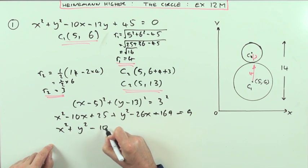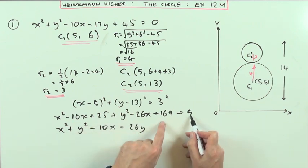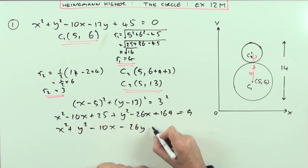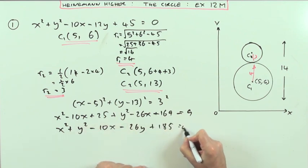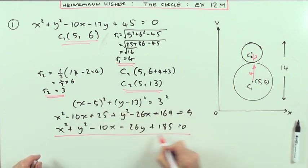x squared, y squared, minus 10x, minus 26y. Then adding this together, take the 9 across, that's 160, so 185. It doesn't take a lot to reconstruct the expanded form from the concise squared form. So, thank you very much.